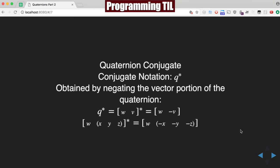Again, going on to conjugates. The notation is q and then the little splat. So we're going to be obtaining this by negating the vector portion. And negating means multiplying by a negative 1 scalar. So it's pretty simple. It just looks like each of the above.